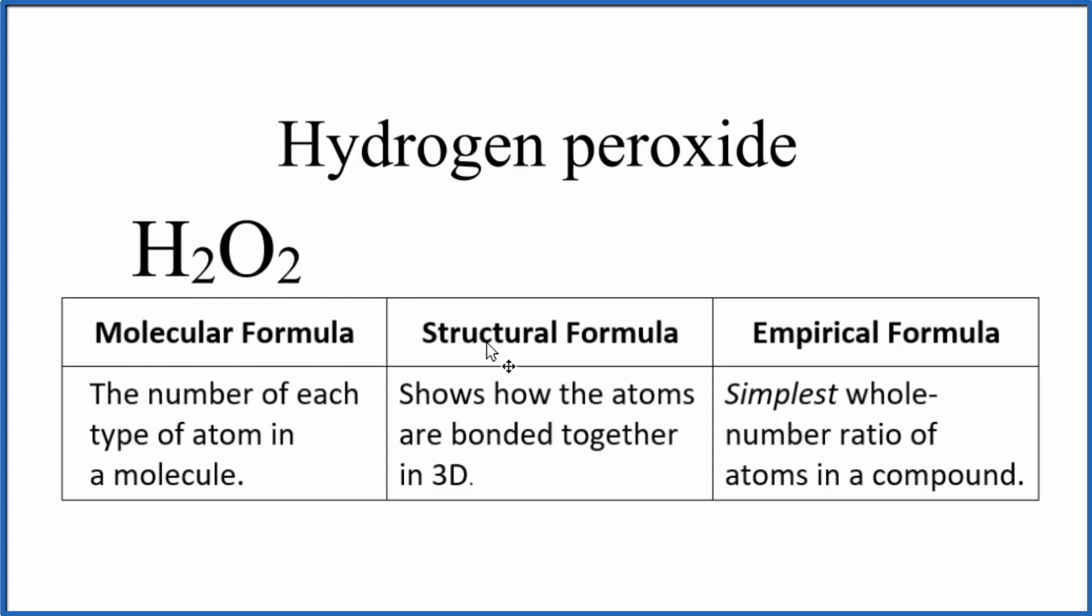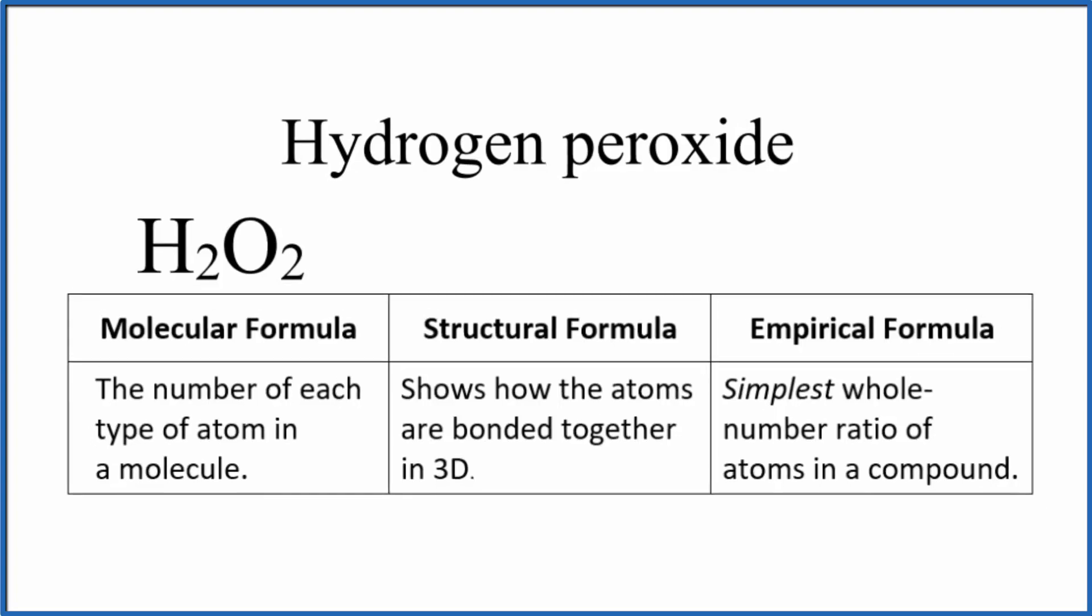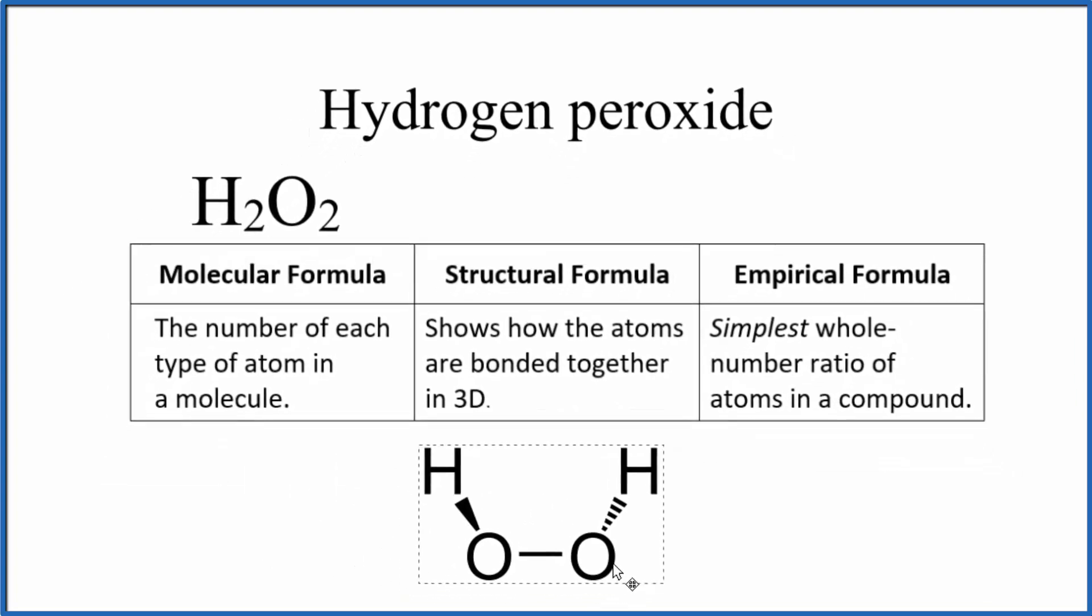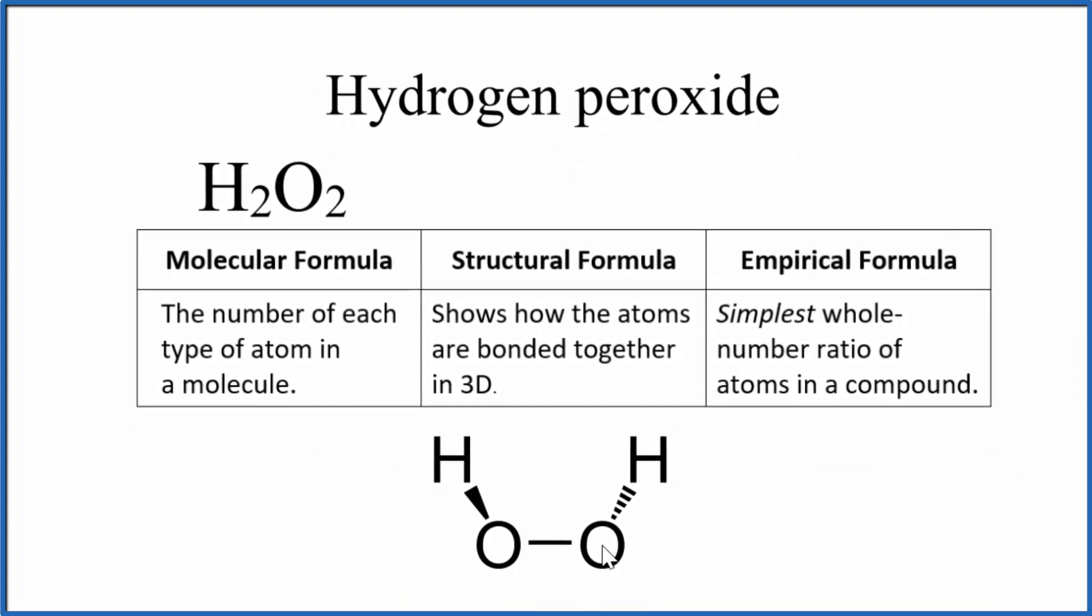But it really doesn't tell us how they're bonded together. So for that we need a structural formula. That would look like this. This is the structural formula for hydrogen peroxide. Two oxygens are bonded together, then we have the hydrogens here. So the structural formula gives us a little bit of a 3D idea how the atoms are bonded together.